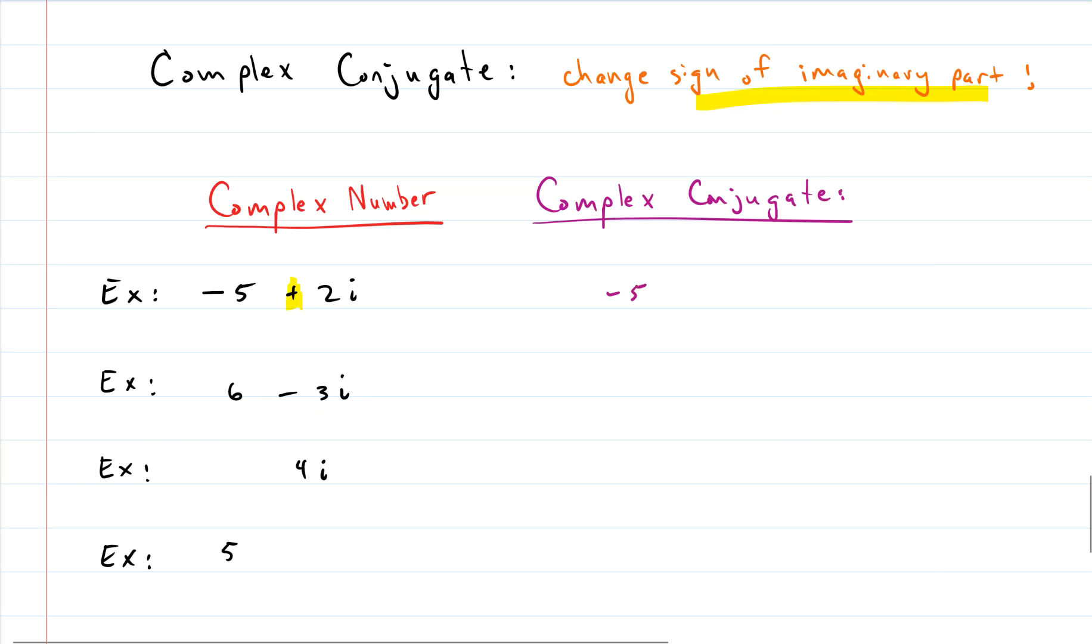Down here the imaginary part is negative, so we would change it to positive. So we'd have 6 plus 3i is the complex conjugate to 6 minus 3i. Note the real part we don't change at all.